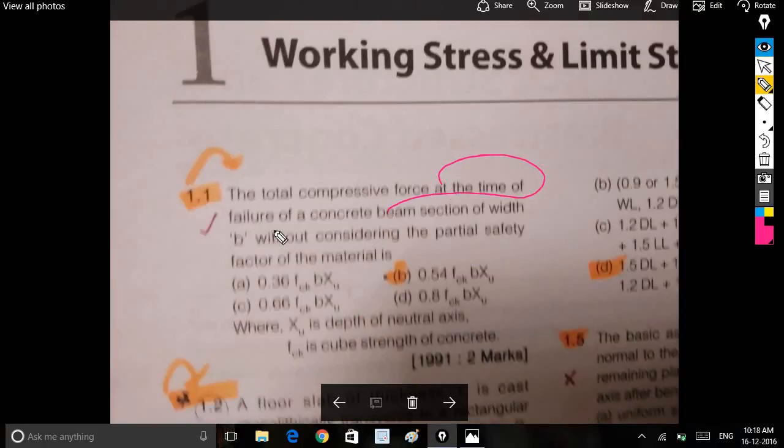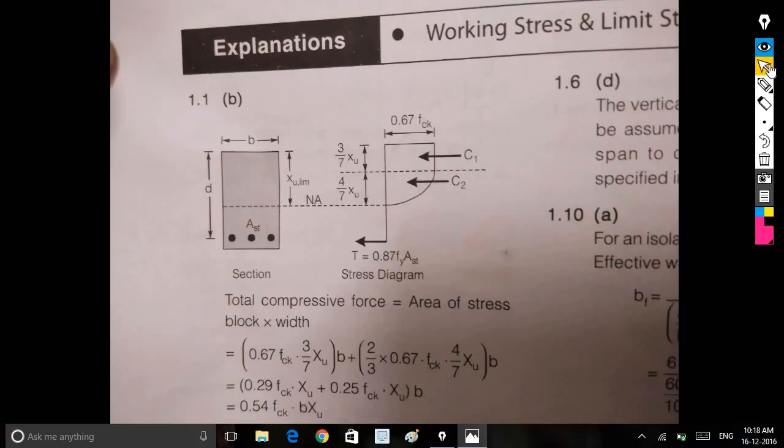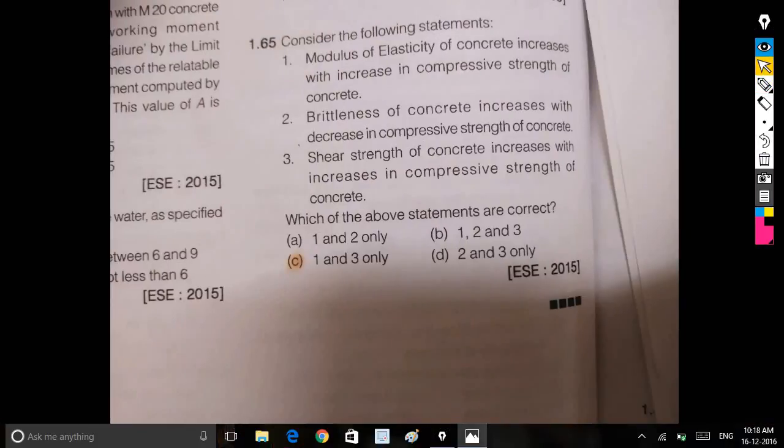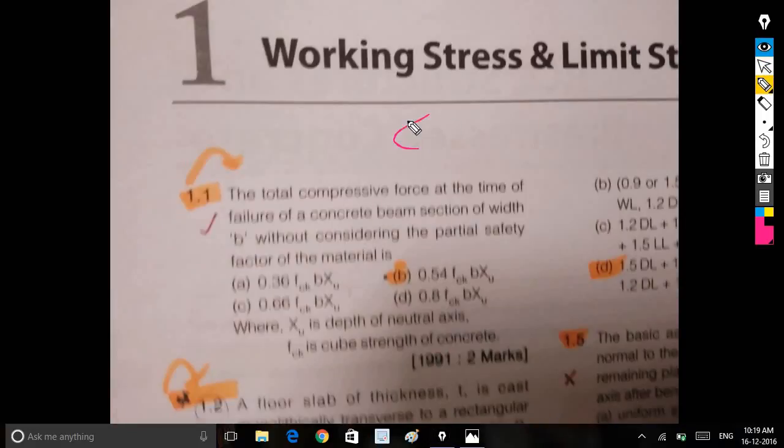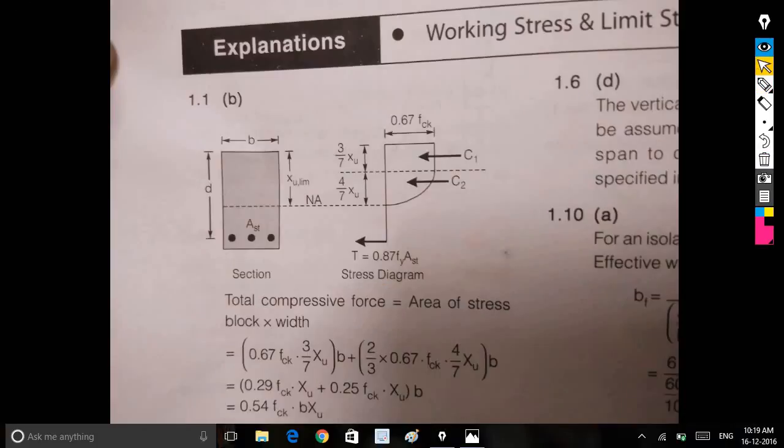The total compressive force at the time of failure of concrete beam section of width B without considering the partial safety factor. The formulas: 0.36 fck bz equals 0.36 fck times 3 by 7 of xu, or two-thirds of 0.446 fck bz equals 4 by 7 of xu times b.